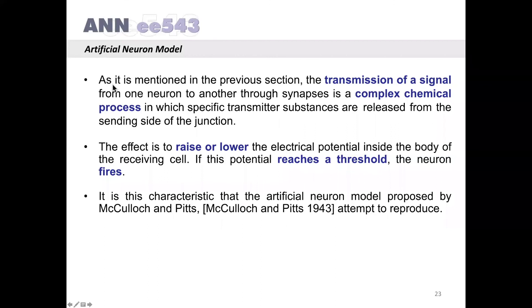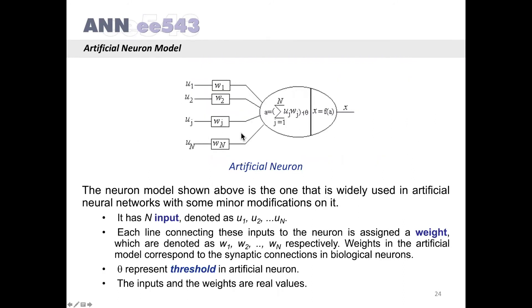Artificial Neuron Model. As mentioned in the previous section, the transmission of a signal from one neuron to another through synapses is a complex chemical process in which specific transmitter substances are released from the sending side of the junction. The effect is to raise or lower the electrical potential inside the body of the receiving cell. If this potential reaches a threshold, the neuron fires. It is this characteristic that the artificial neuron model proposed by McCulloch and Pitts attempts to reproduce. This is the model of the artificial neuron.